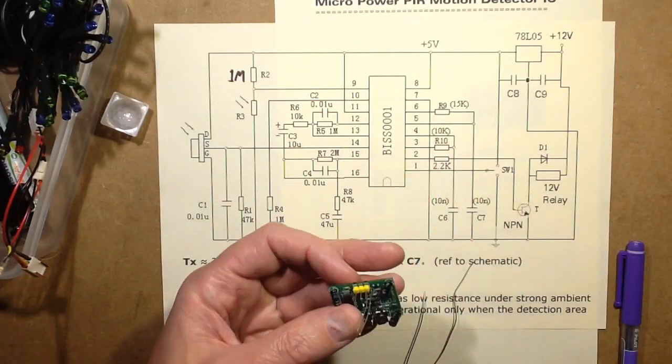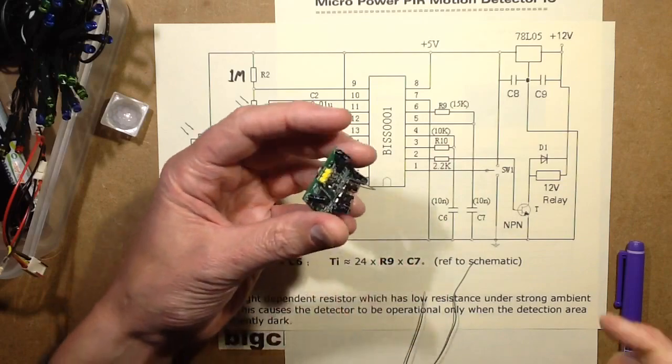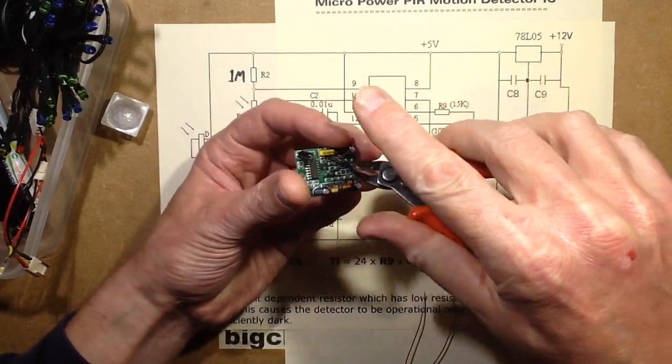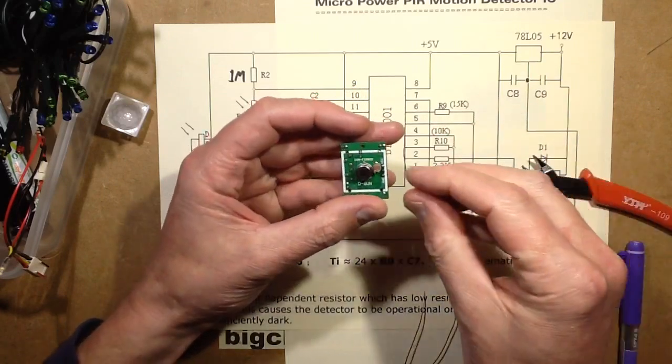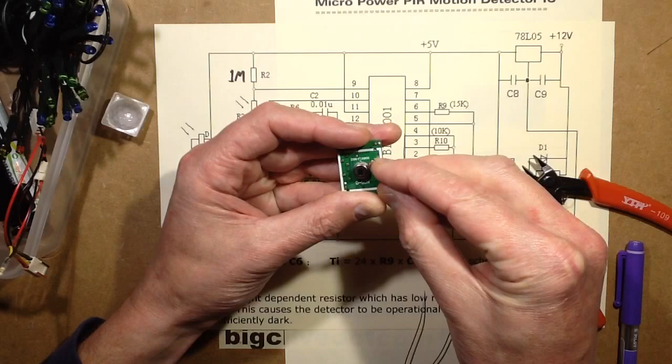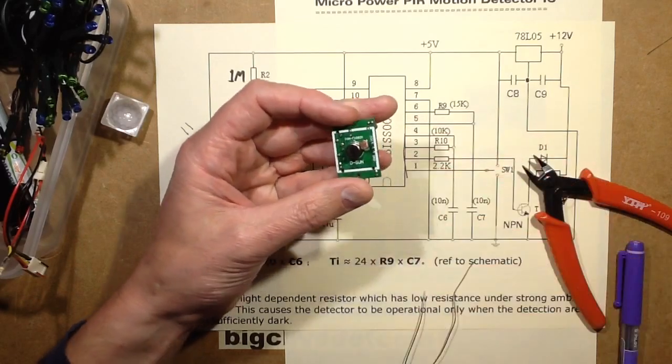So let's get the snips, I'll use the generic Chinese eBay snips for this. And I'm going to bend this fairly close to the sensor just so I can get the cover over it.